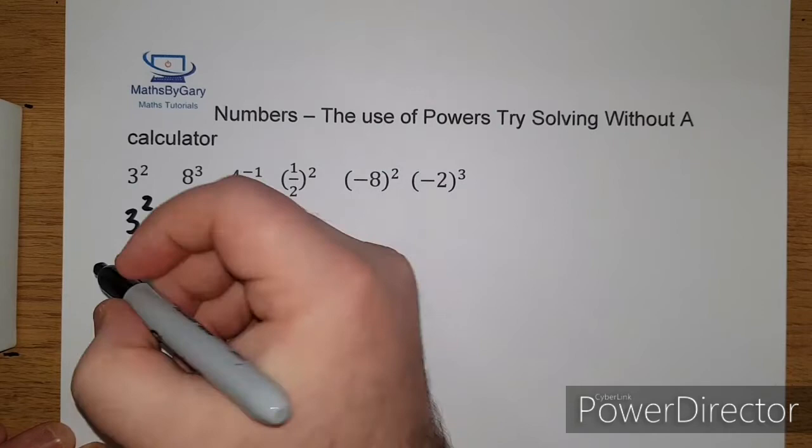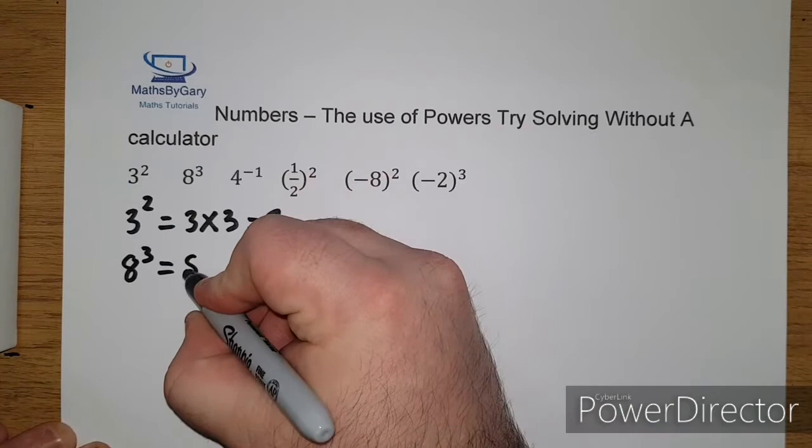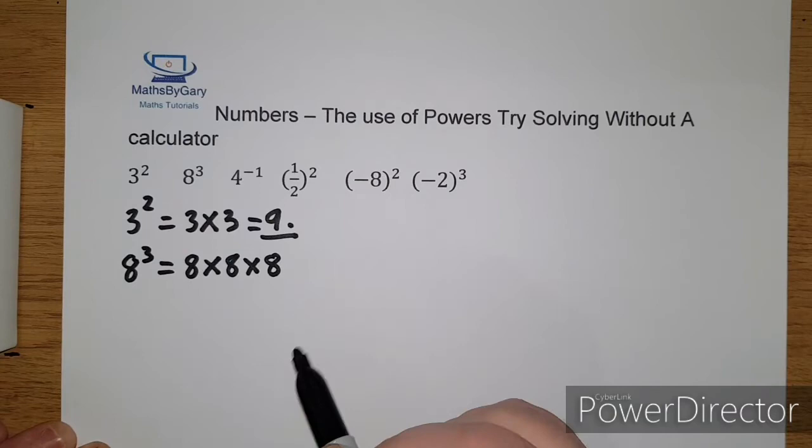Okay, so moving on to the next example which is 8 to the power of 3 or 8 cubed. So this is 8 times 8 times 8.